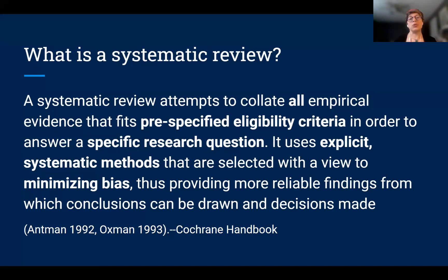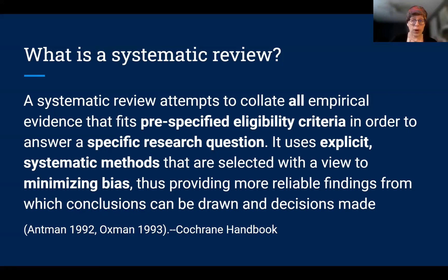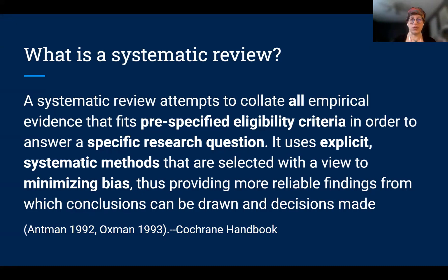Systematic reviews are different from other studies because you have to have a plan in place before you start — everything specified before you even get started so the team knows what you're researching. You have to have a very specific research question to get the results you need, and you have to use explicit methods — describing what you've done so others can rerun the review if they want to. Bringing all these different studies together helps minimize bias because you're trying to accept all the literature and only exclude those that don't follow the pre-agreed criteria.